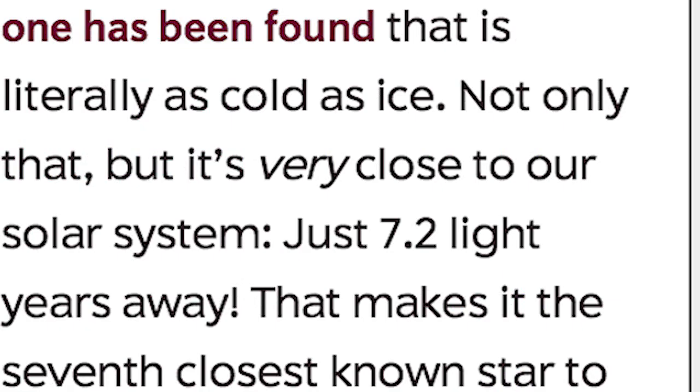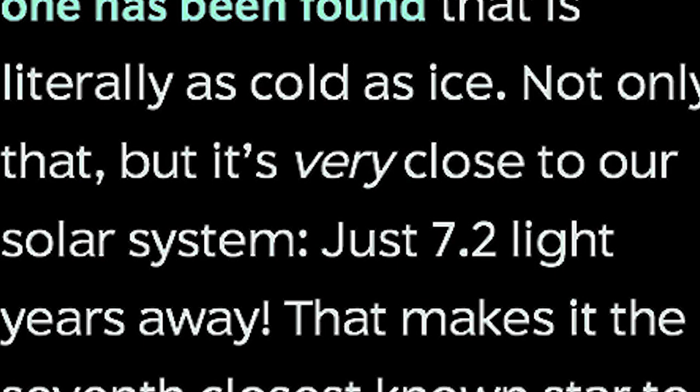And now one has been found that is literally as cold as ice. And not only that, but it is very close to our solar system. Notice he italicized 'very,' that is very important. It is just 7.2 light years away. That means if you were being a light, it would only take you 7.2 years to get there.